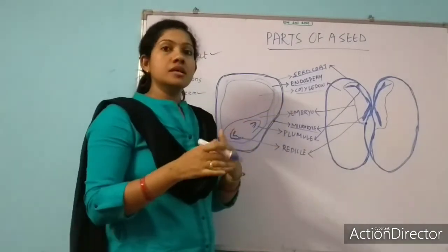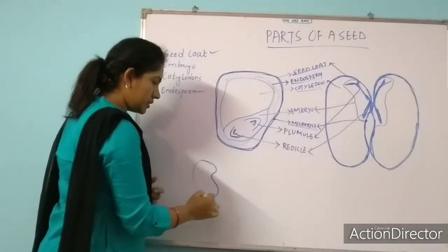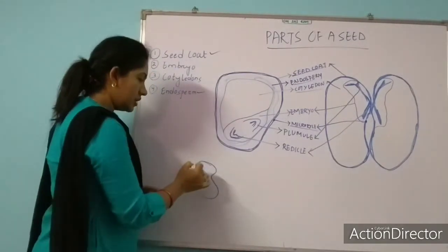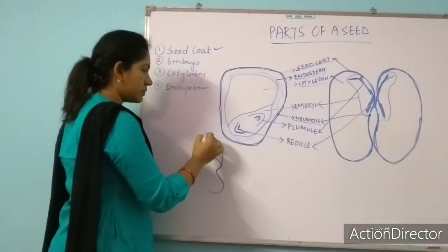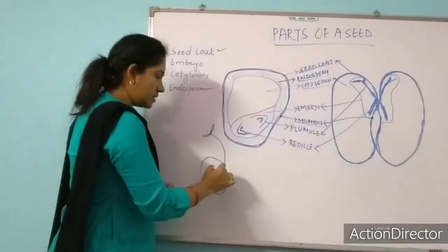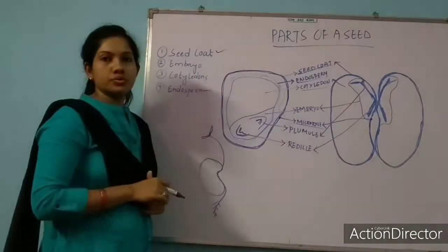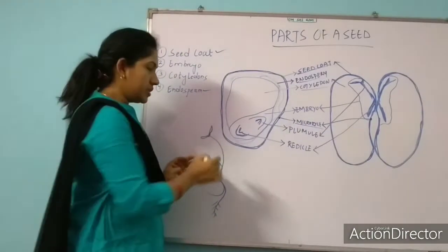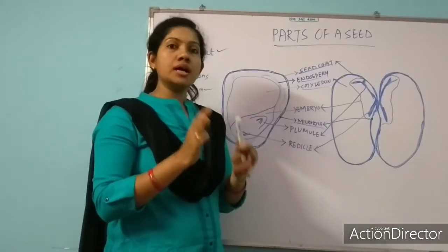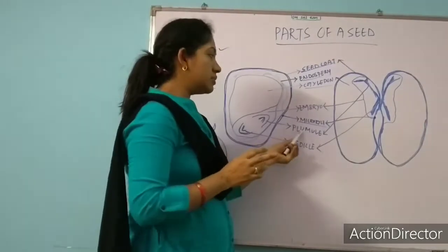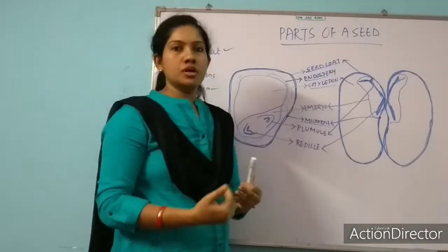When the seed germinates, the plumule part goes up, forming the shoot, and the radicle part comes down, forming the root. So this is all about the embryo. Remember: an embryo has two parts — plumule and radicle. Plumule gives rise to the shoot and radicle gives rise to the root.